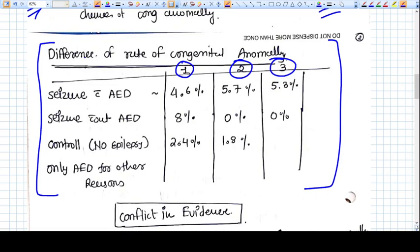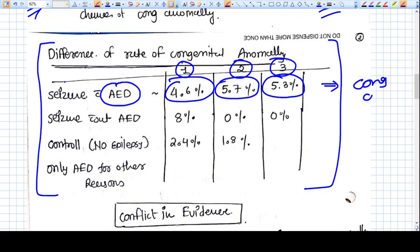A pregnant lady with seizure disorder who is taking anti-epileptic drug has 4.6% in one study, 5.7% in second study, and 5.3% in third study chances of having congenital anomaly.